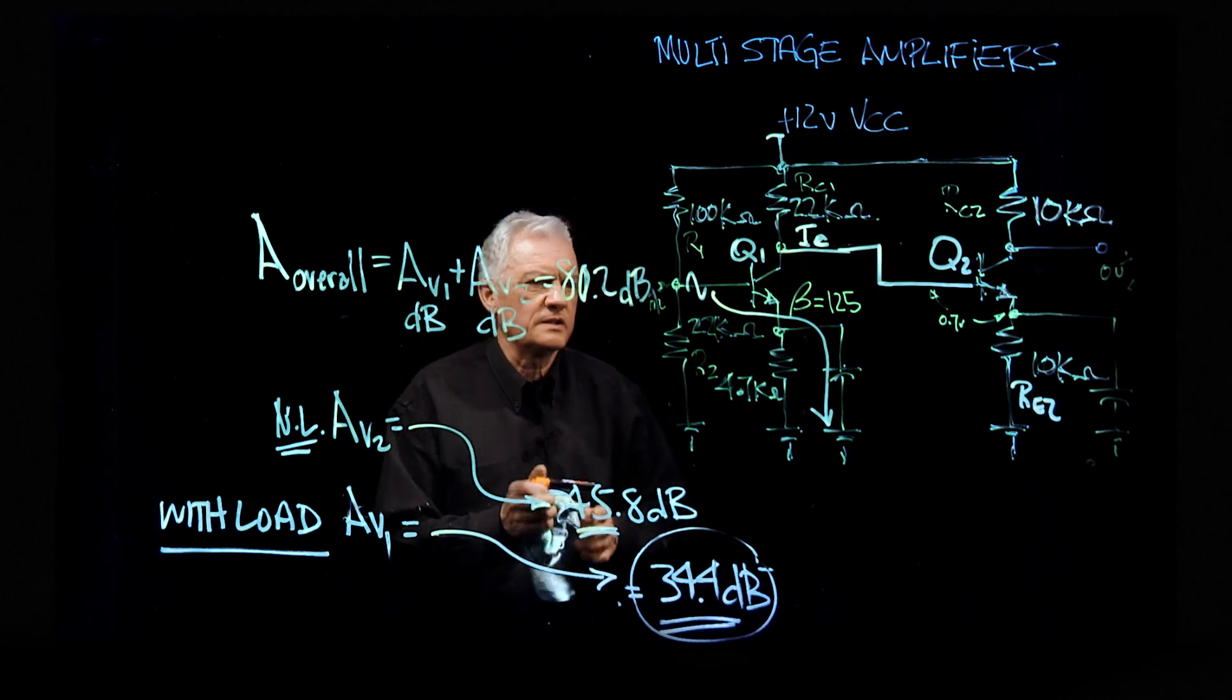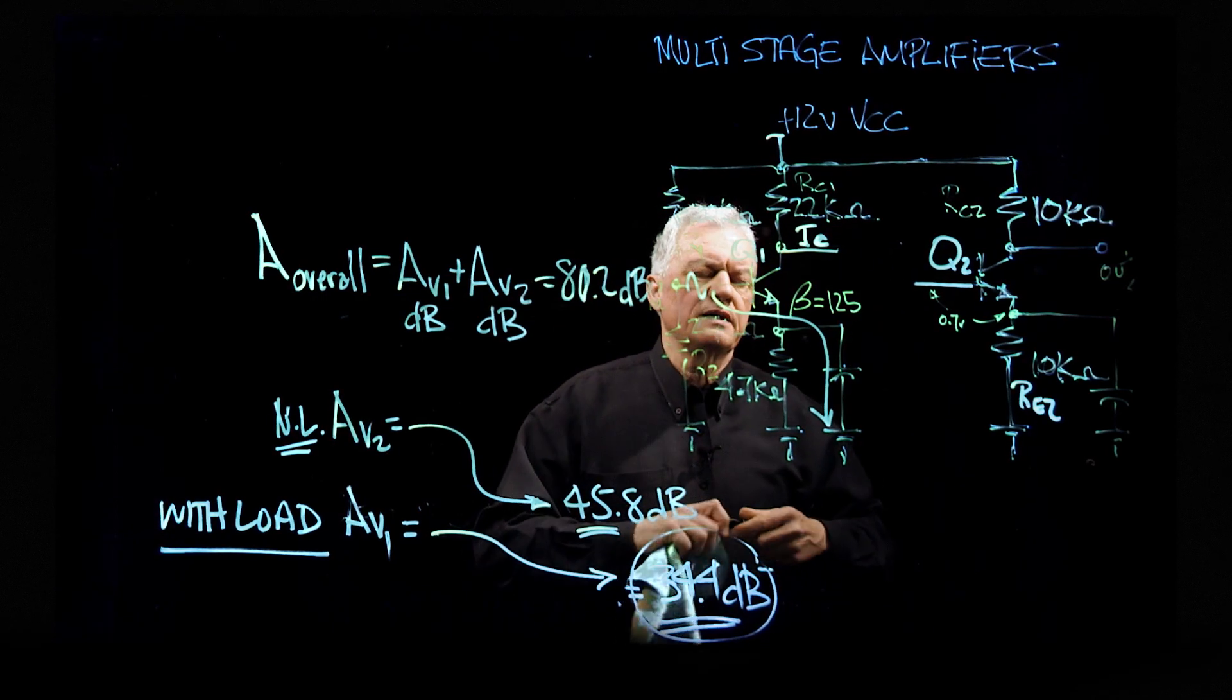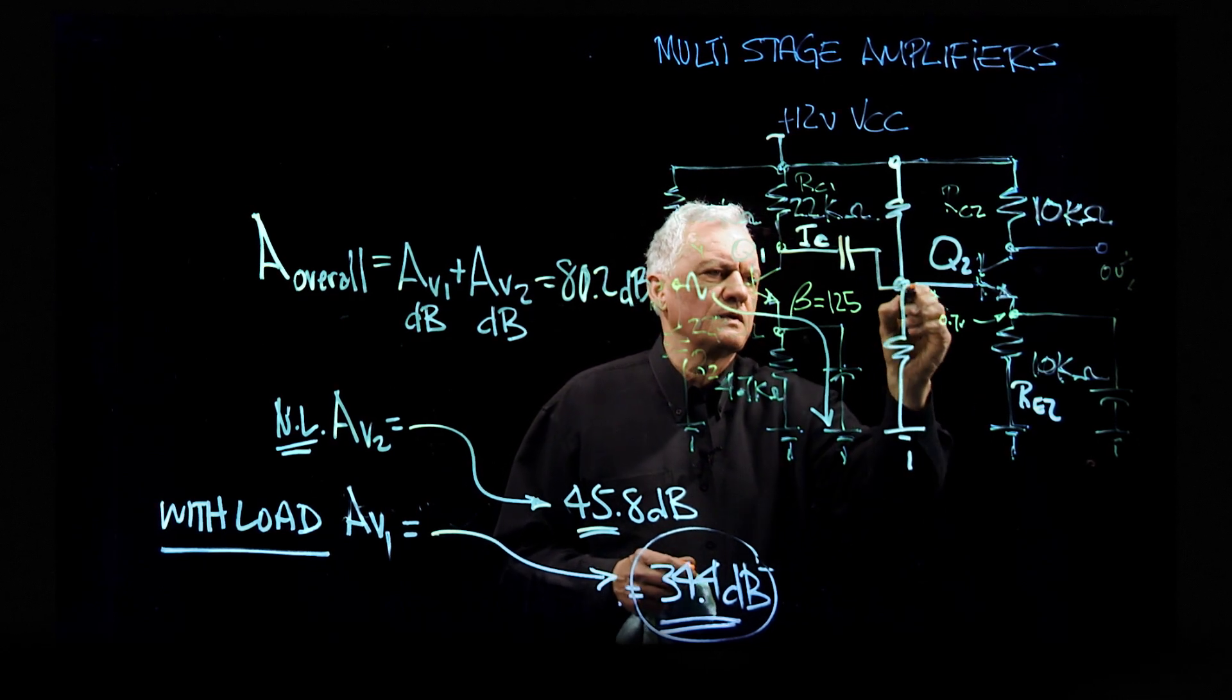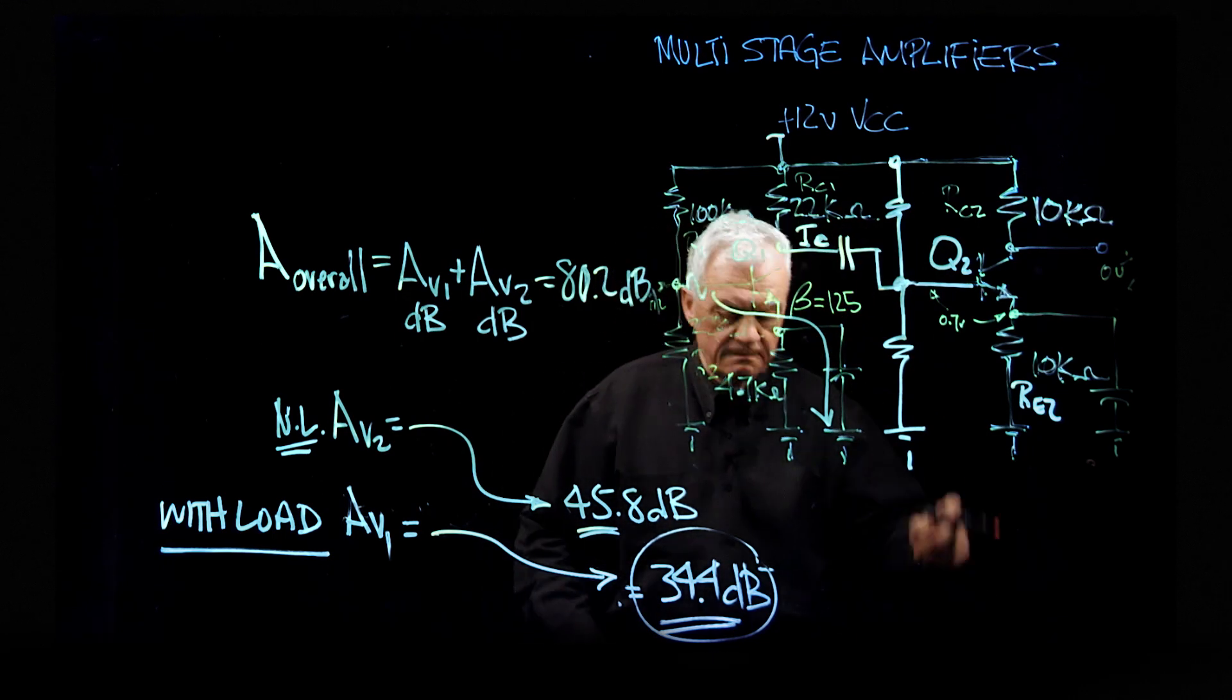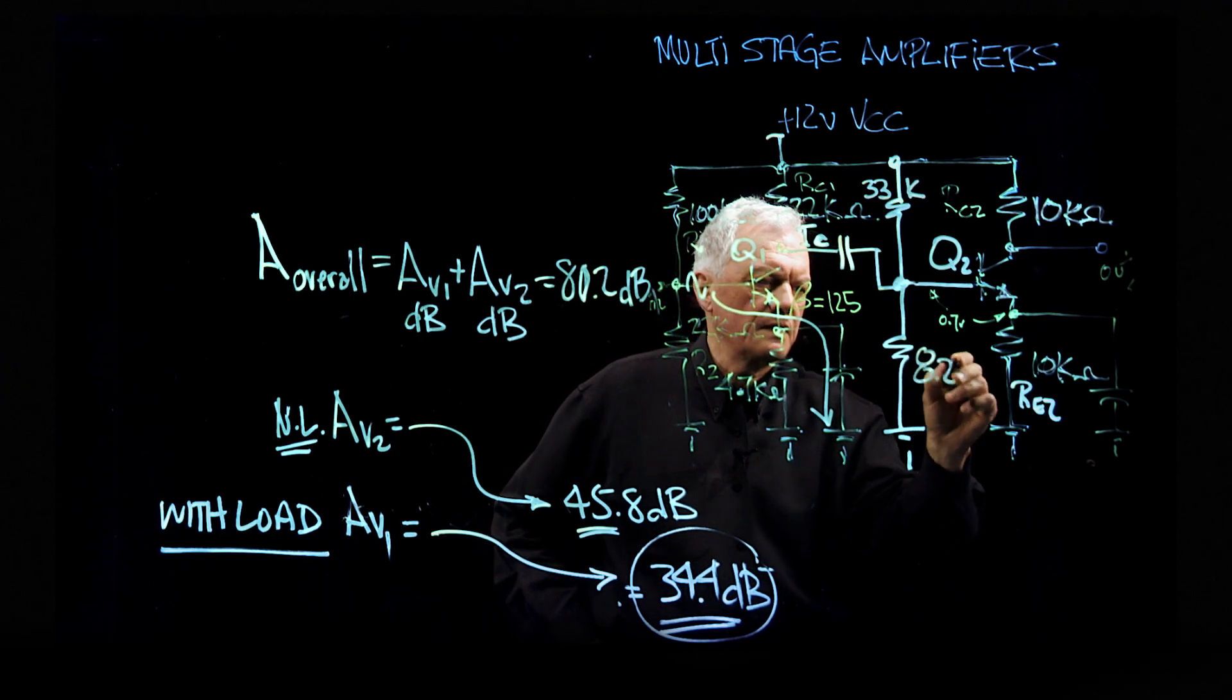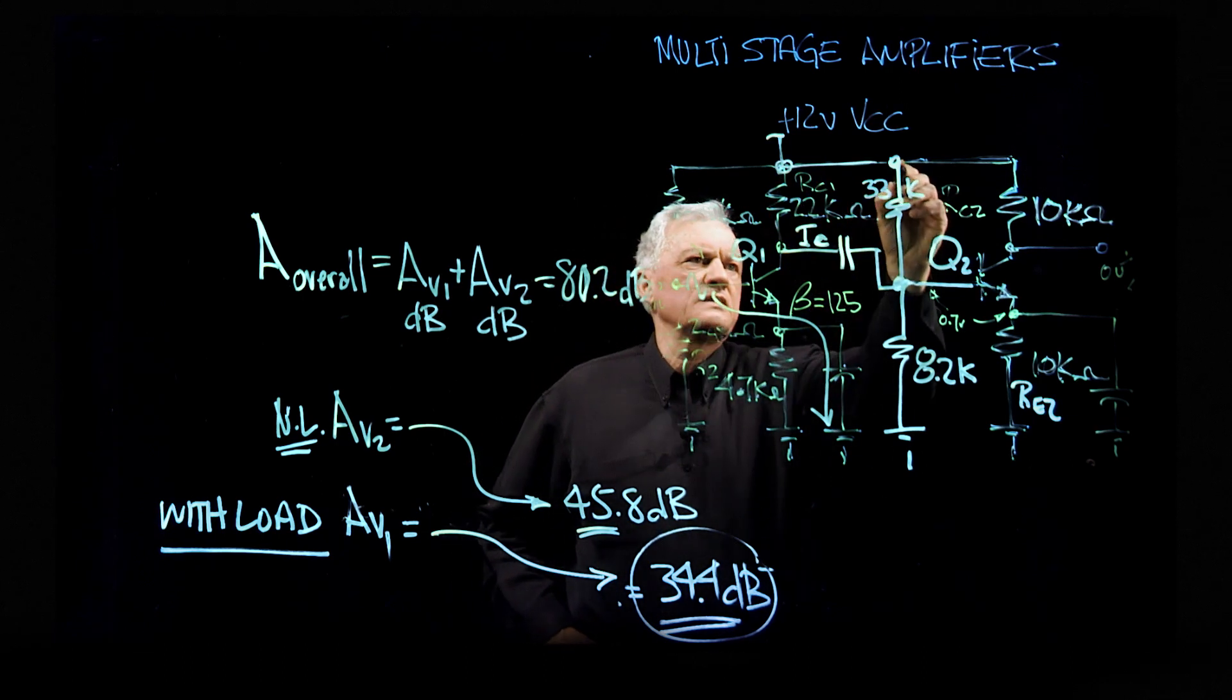What I want to do is I'm going to capacitively couple now, and I'm going to come down here with a so-called stiff voltage divider. And what do I want to give it? Let's say, how about 33K? And I'm going to make this 8.2K. So in this case here, what I'm going to point out is, and we can go through the DC setup again, but I'm not going to do that. I'm going to leave that for you to do.